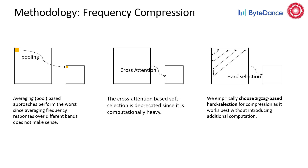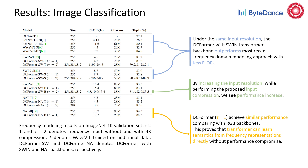We conduct experiments on multiple datasets and various tasks. On ImageNet classification tasks, the DC former significantly outperforms previous frequency domain-based approaches by a significant margin with fewer FLOPs, as shown in blue. Benefiting from the proposed frequency domain compression, by increasing the input resolution while performing input compression, we see performance increase, as shown in green.